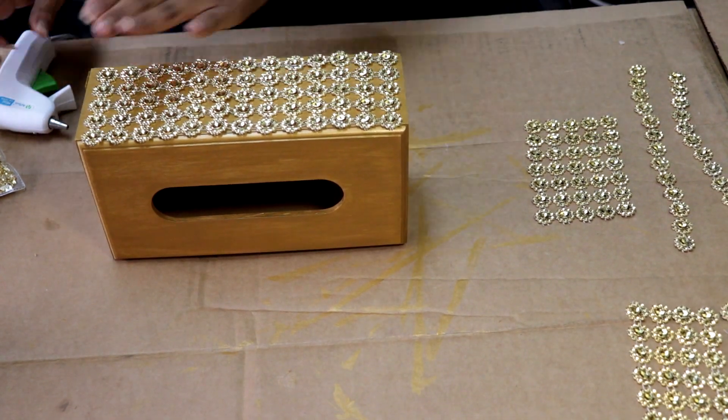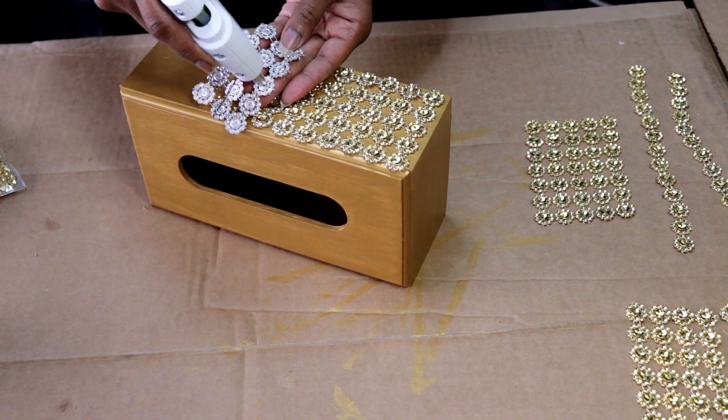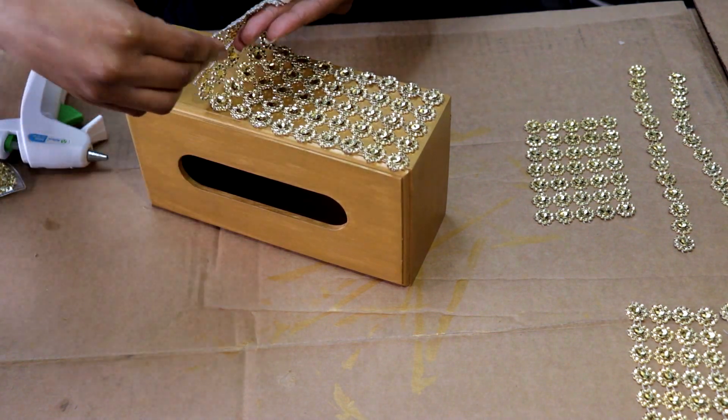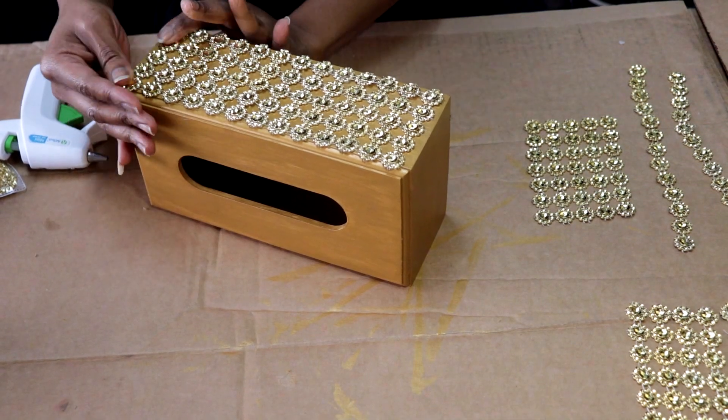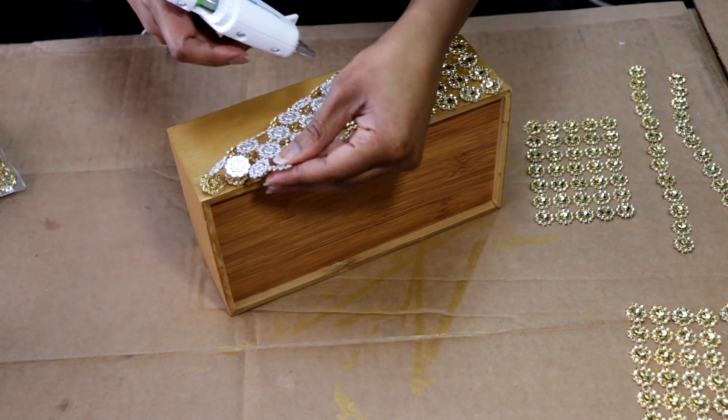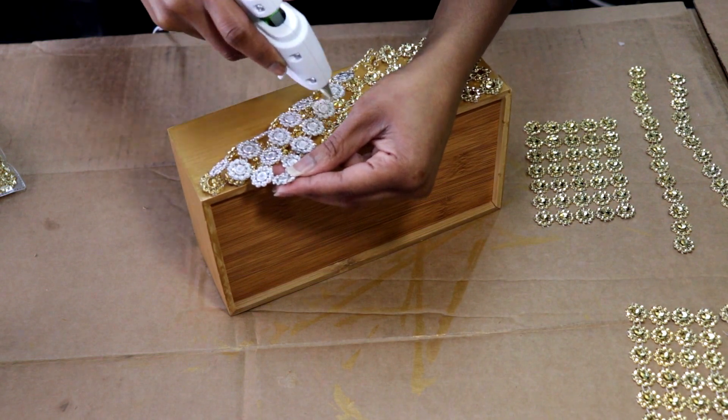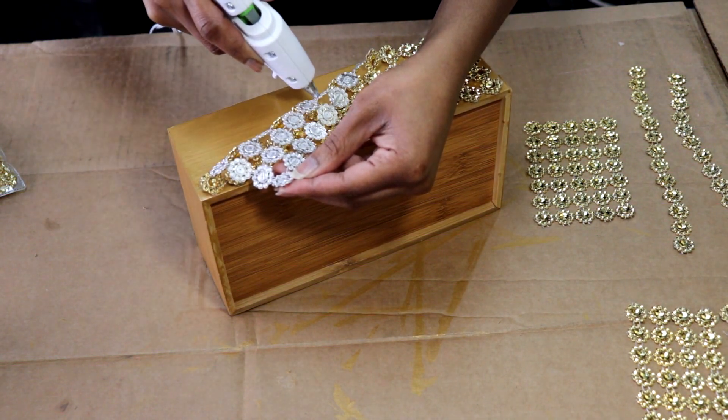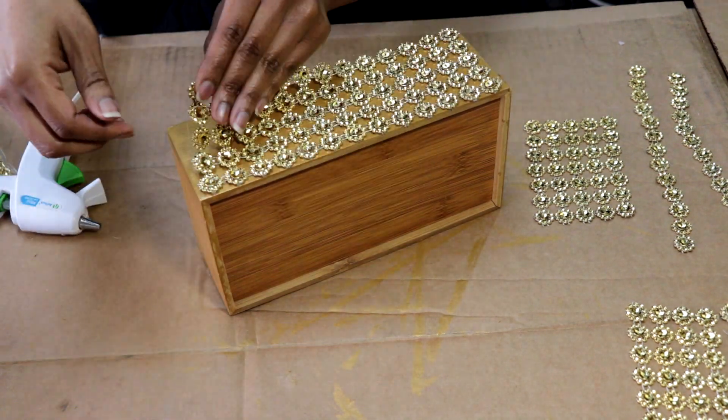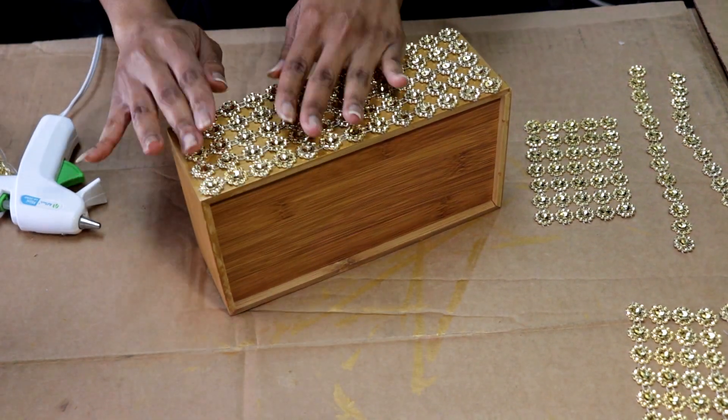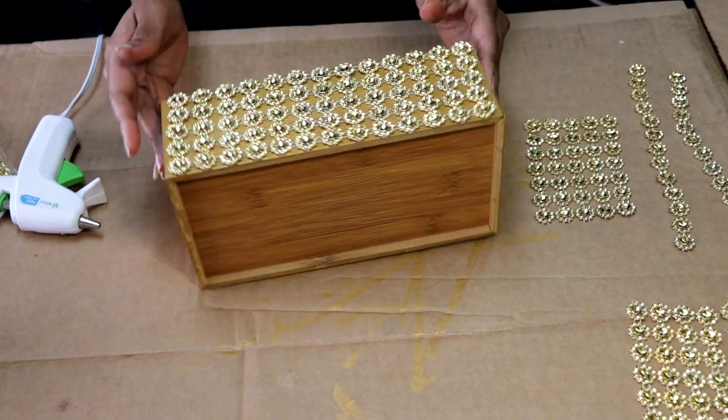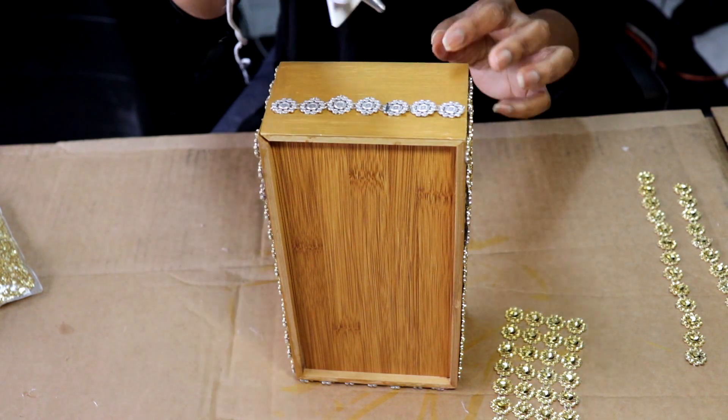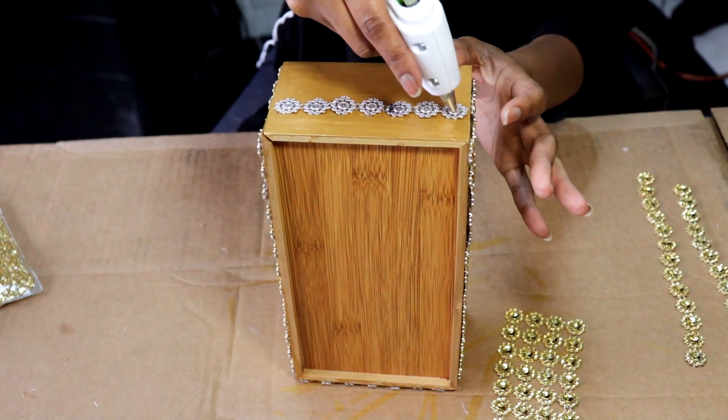Then I laid it down and went back in and put the glue on all of the rhinestones and attached it. As you're attaching the rhinestones to the tissue box, put pressure on them to make sure they attach very well to the box.